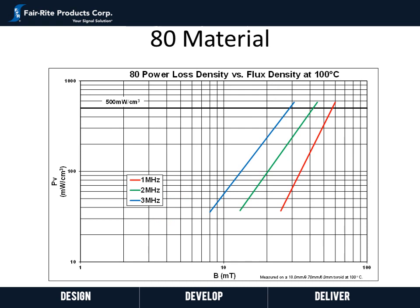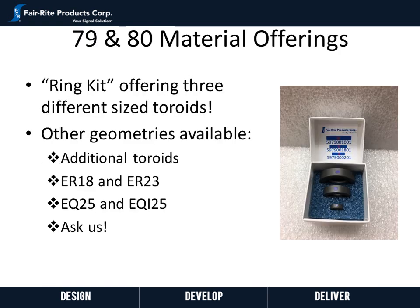For 80 material, we are plotting power loss density versus flux density at 100 degrees Celsius at frequencies ranging from 1 megahertz to 3 megahertz. We have also bolded the power loss density at 500 milliwatt per CC for reference, as we did on the 79 material. At 3 megahertz, for example, you don't hit 500 milliwatt per CC until up close to 30 milli Tesla — this performs very well compared to other similar competitor materials.